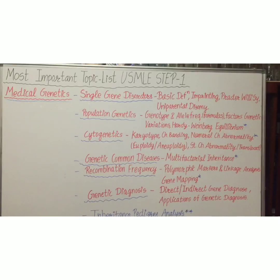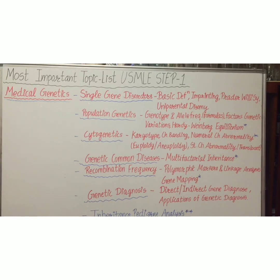Welcome back to my channel Miss Medicine. Today we will discuss the most important topic list for USMLE Step 1 subjects: medical genetics, immunology, and microbiology. We already discussed the most important topic list for anatomy, biochemistry, and biostatistics in a previous video. If you want to see that video, I will give you the link in the description box.